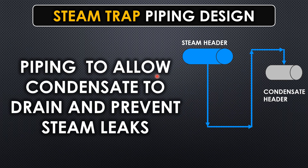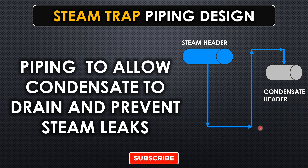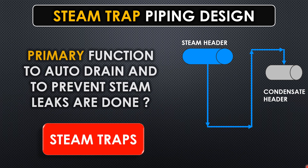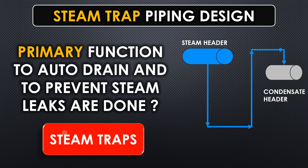The steam trap piping is designed to allow the condensate to drain and to prevent steam leaks — it does both functions. One is to drain the condensate and another is to prevent steam leaks. But it is not possible for piping alone to perform two different functions at the same time. That's why a component called the steam trap is used, whose primary function is to auto-drain and to prevent steam leaks.